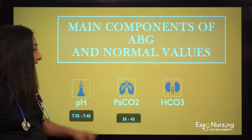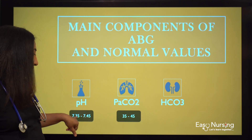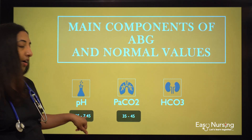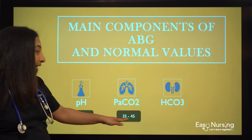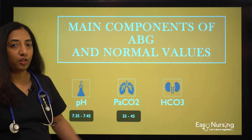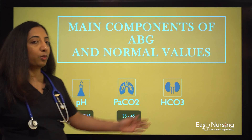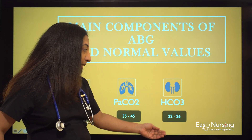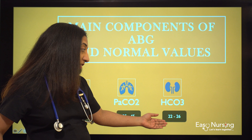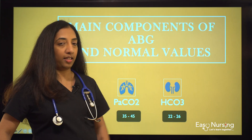PaCO2 is really easy because you can take that same range: it is 35 to 45. So you really need to learn bicarb's normal value — it is 22 to 26.